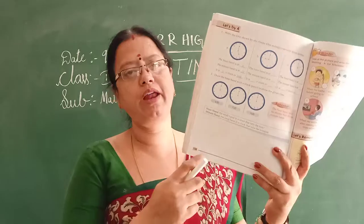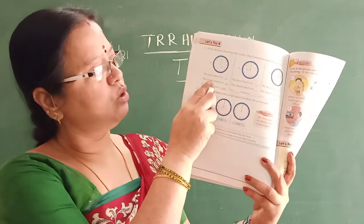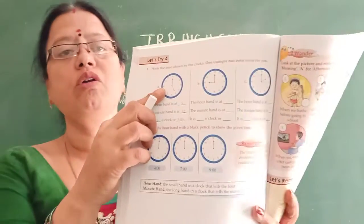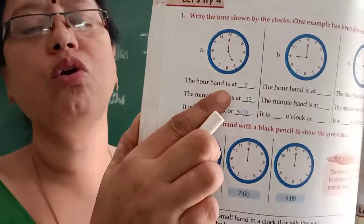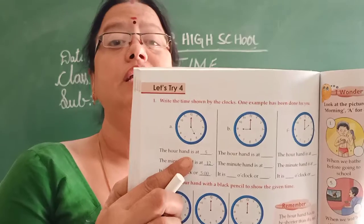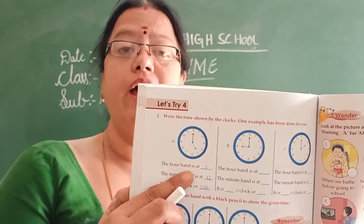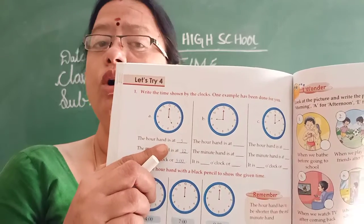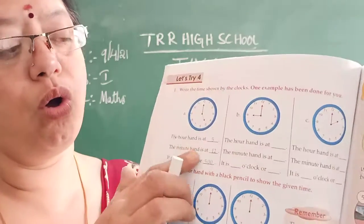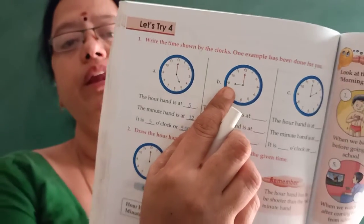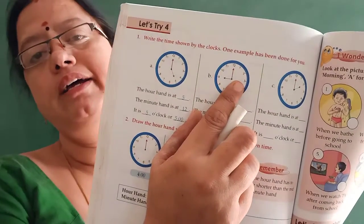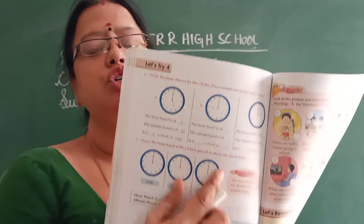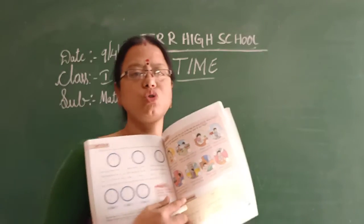Look at this clock. Is it four o'clock or five o'clock? See properly — yes, it is five o'clock. The short hand is on five and the long hand is on twelve, so this time is five o'clock. Now here, the short hand is on nine and the long hand is on twelve, so the time is nine o'clock.